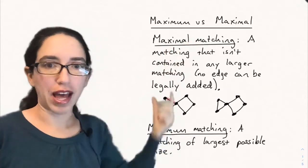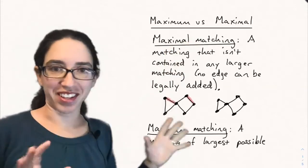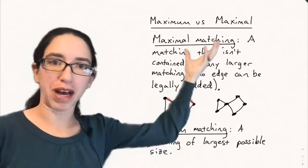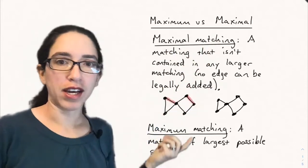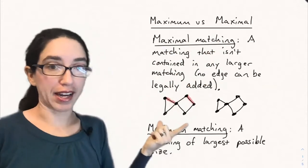There's two kinds of different notions of biggest. There's maximal and maximum. It's a subtle difference, but a maximal matching is a matching that isn't contained in any larger matching. In other words, no edge can be legally added.